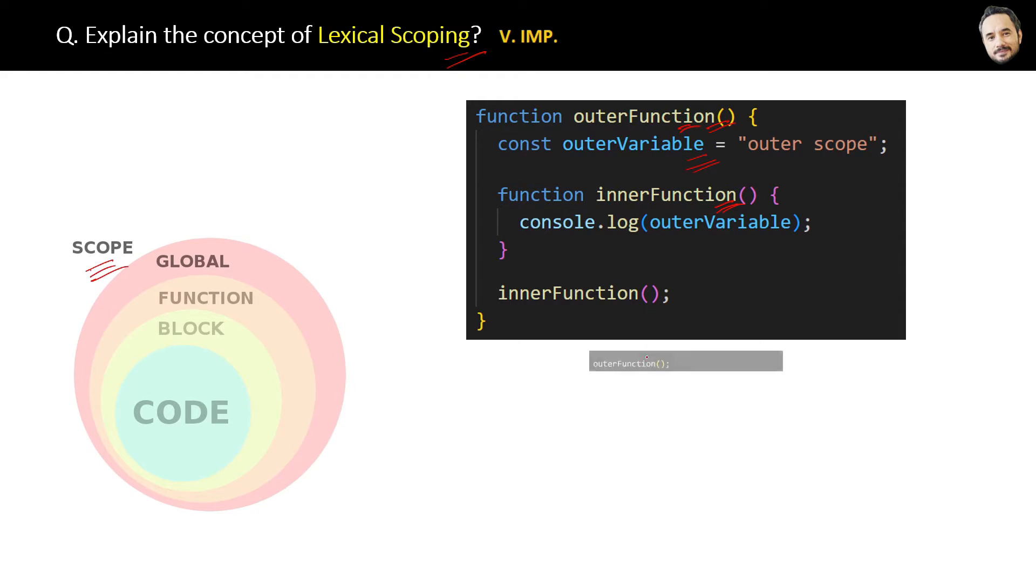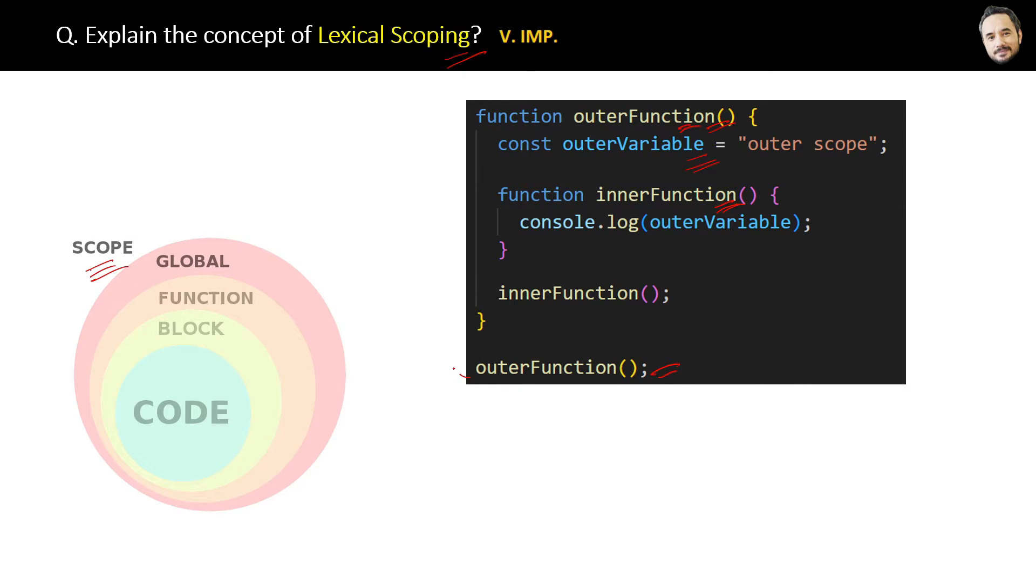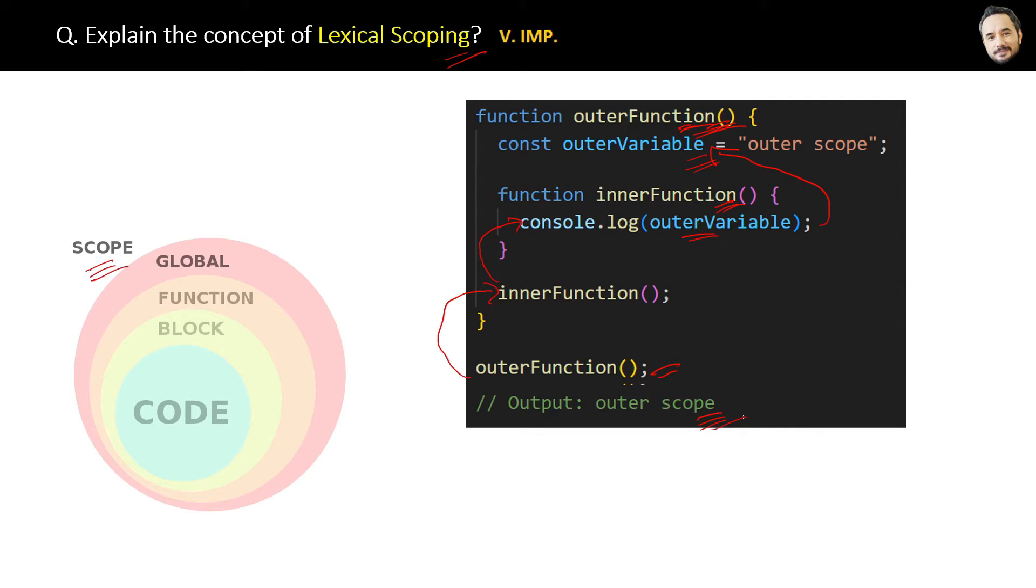Now when we call the outer function, that will ultimately call this inner function. Listen carefully: the inner function is able to access this outer variable which belongs to the outer function, which is basically the parent function, and we will get the proper output. So here, this ability of the inner function to access the variable of the outer function is called lexical scoping.